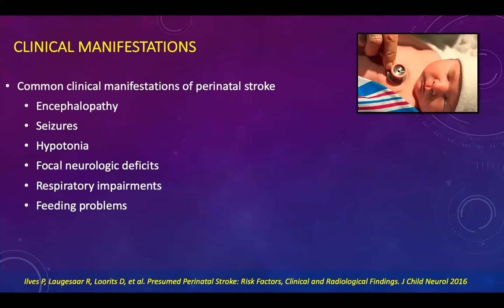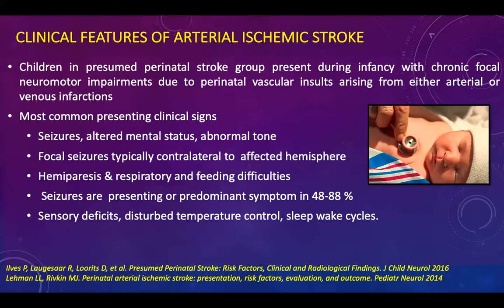Clinical manifestations are varied since the neonatal unit has a limited repertoire of clinical responses. Important clinical presentations include encephalopathy, seizures, hypotonia, focal neurological deficits, respiratory impairment, and feeding problems. In the arterial ischemic stroke group, infants present during infancy with chronic focal neuromotor impairments due to perinatal vascular insult from either arterial or venous infarctions. The most common signs include focal seizures typically contralateral to the affected hemisphere, respiratory and feeding difficulties, sensory deficits, disturbed temperature control, and sleep-wake cycle disturbances.